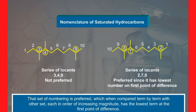That set of numbering is preferred which, when compared term by term with another set, each in order of increasing magnitude, has the lowest term at the first point of difference. For example, the set of numbering 2,7,8 is preferred over the set 3,4,9 since 2 comes before 3. The correct name is 2,7,8-trimethyldecane and not 3,4,9-trimethyldecane.